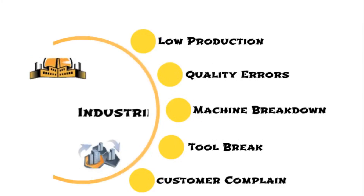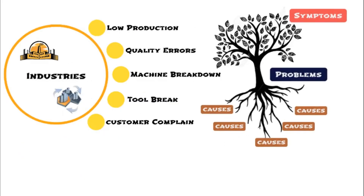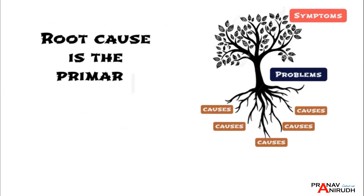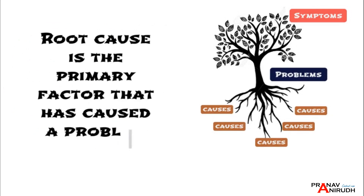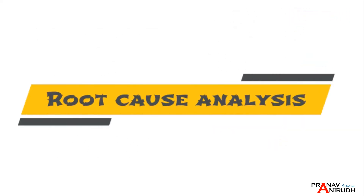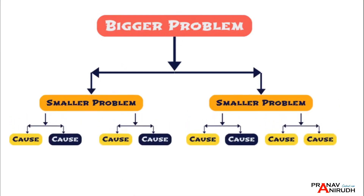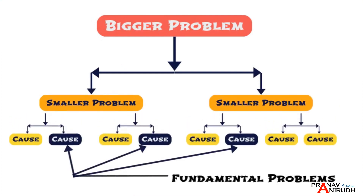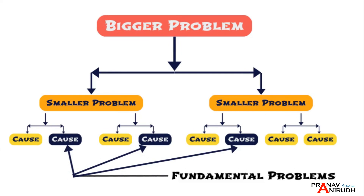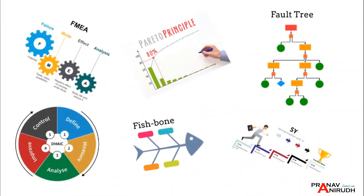Problems are inevitable in any process. Root cause refers to the source of a problem — it is the original primary factor that has caused a particular problem to occur, and is usually identified through problem-solving methods such as root cause analysis. The goal of finding the root cause is to identify the fundamental problem that needs to be addressed in order to prevent similar issues from occurring in the future.